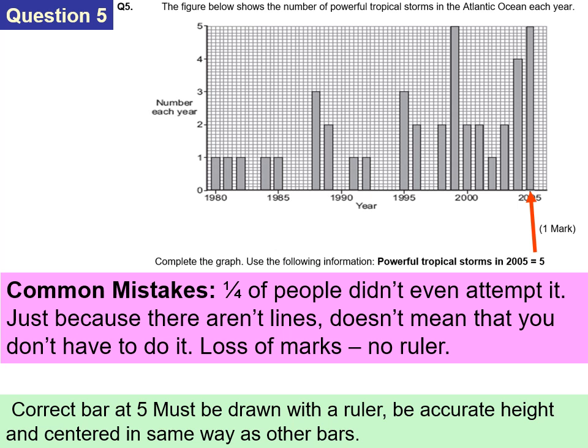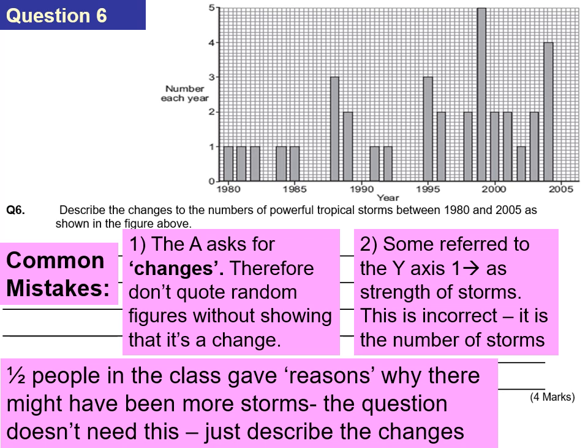Many people didn't even attempt the next question, perhaps because there wasn't a line there. It shows the number of powerful tropical storms in the Atlantic each year. A common mistake: the bar must be the same width, the same height, centered, and match the other bars — drawn with a ruler. The powerful tropical storms in 2005 were five, so draw a bar up to number five.